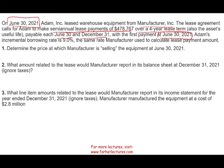The first thing we need to compute is the price at which the manufacturer is selling the equipment on June 30th, 2021. Although they're not giving you the price, they're telling you that you're going to be making eight payments — that's four years times two semi-annual payments. Each payment is $478,767, and notice that the first payment is due today.